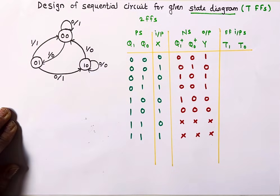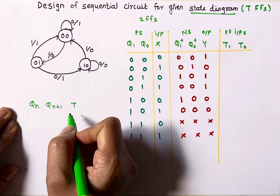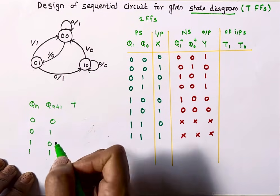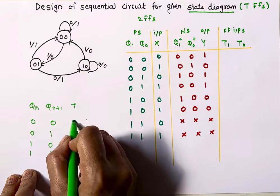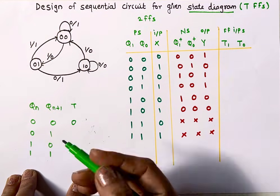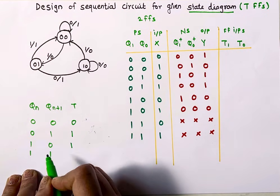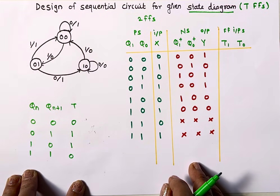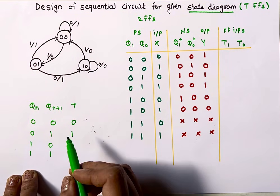I will write the excitation table of the T flip-flop. Qn is the present output, Qn+1 is the next state output, and T is the required input. The combinations are: Qn=0, Qn+1=0 → T=0 (no change needed); Qn=0, Qn+1=1 → T=1 (output must toggle); Qn=1, Qn+1=0 → T=1 (must toggle); Qn=1, Qn+1=1 → T=0 (remain same). So T equals the XOR of present and next state.